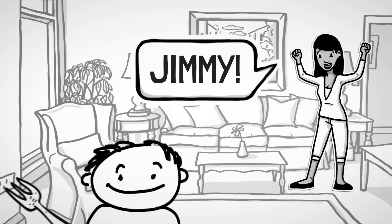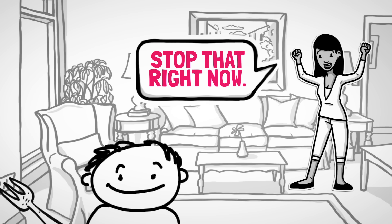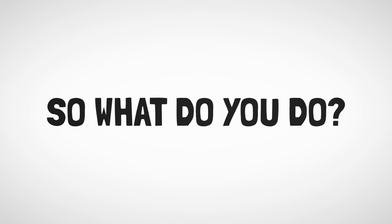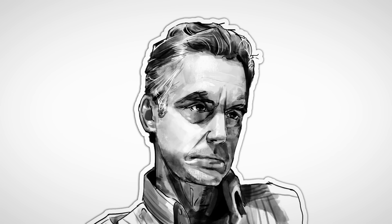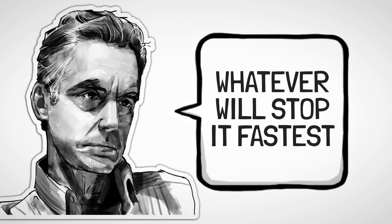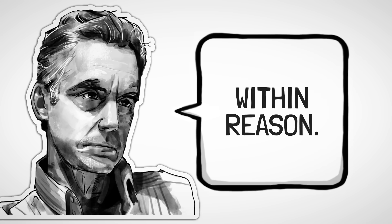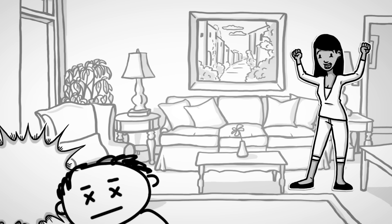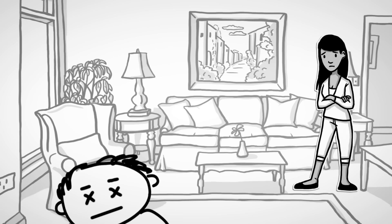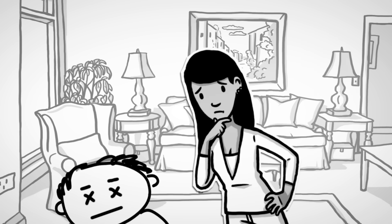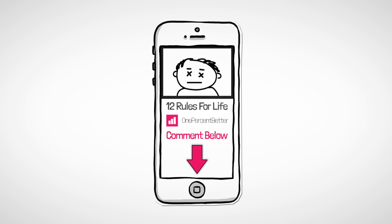You walk into your living room and see little boy Jimmy prodding a fork into the electrical socket. You shout, Jimmy, stop that. He doesn't stop. Jimmy, stop that right now. He doesn't stop. So what do you do? Well, the answer is simple according to Peterson. Whatever will stop it fastest within reason, because the alternative could be fatal. In this scenario, a slap in the face may be justified, if that's what it takes. What do you think? Comment your thoughts below.